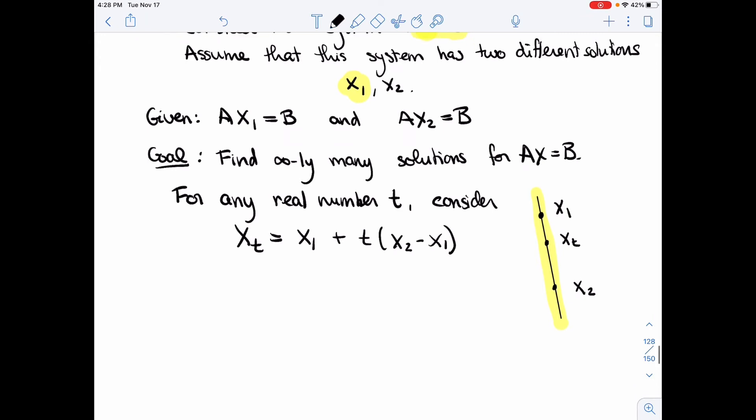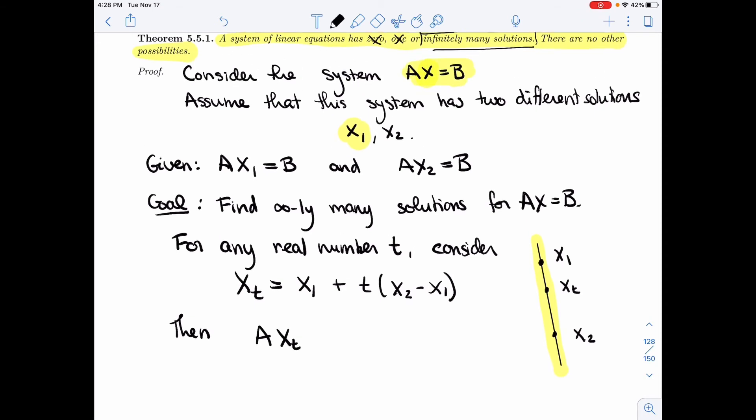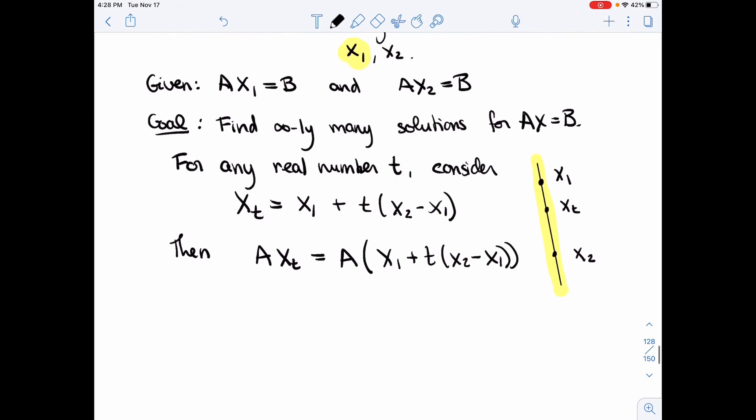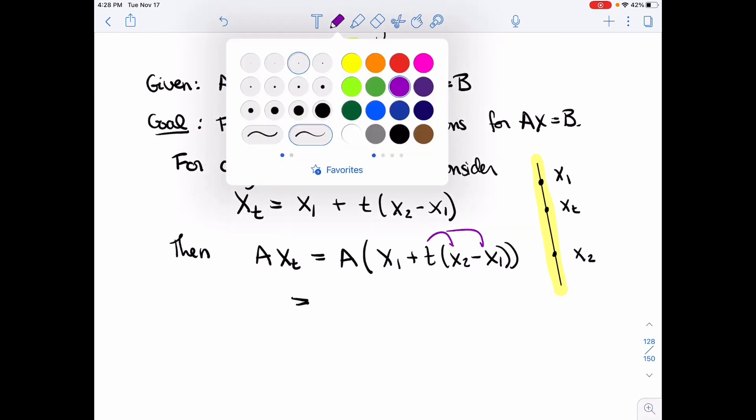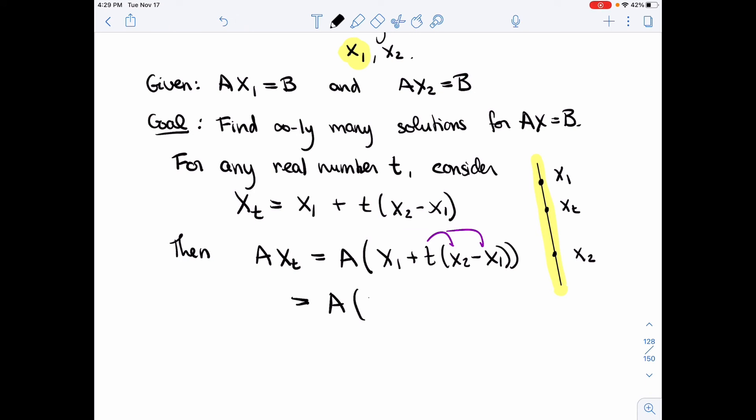I want to prove it's a solution. So I want to plug it into my equation Ax = B and prove that I get B. Let's spell this out. xt is x1 plus t times (x2 minus x1). I'm going to distribute this, and then we'll distribute the A in.